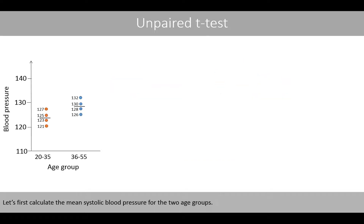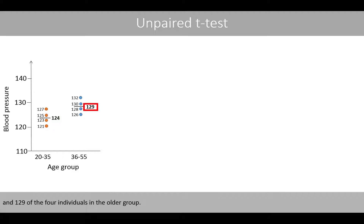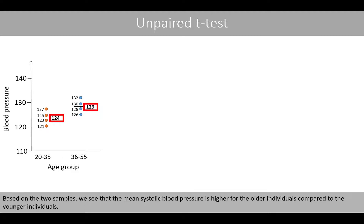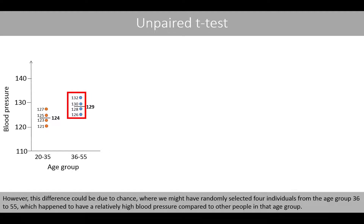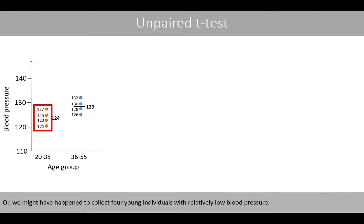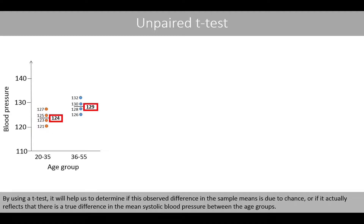Let's first calculate the mean systolic blood pressure for the two age groups. The mean systolic blood pressure of the four individuals in the younger group is 124, and 129 for the four individuals in the older group. Based on the two samples, the mean systolic blood pressure is higher for the older individuals. However, this difference could be due to chance. By using a t-test, it will help us determine if the observed difference in the sample means is due to chance, or if it actually reflects a true difference in the mean systolic blood pressure between the age groups.